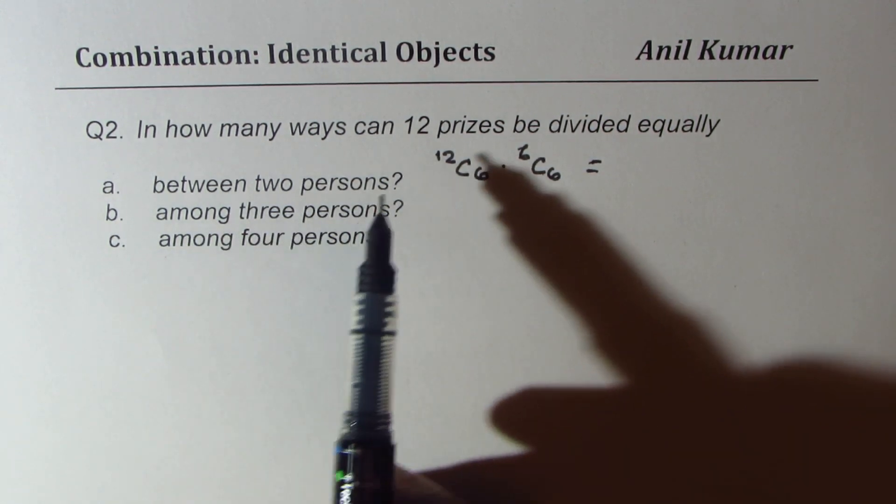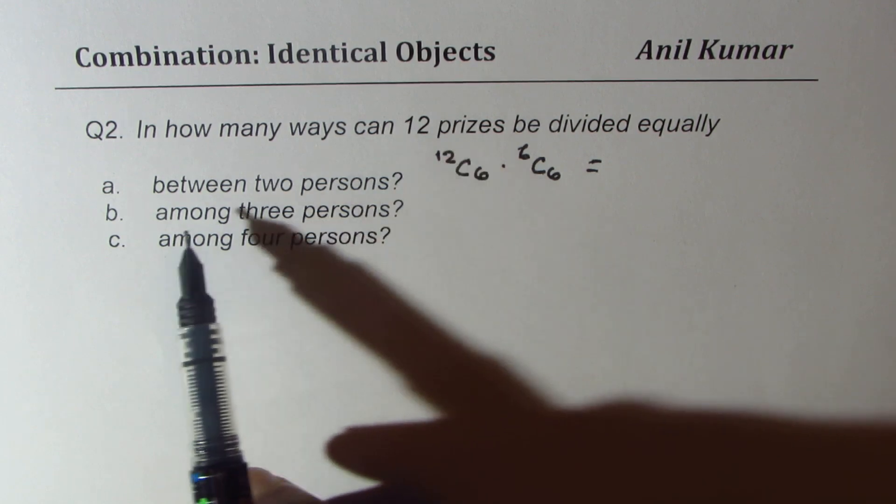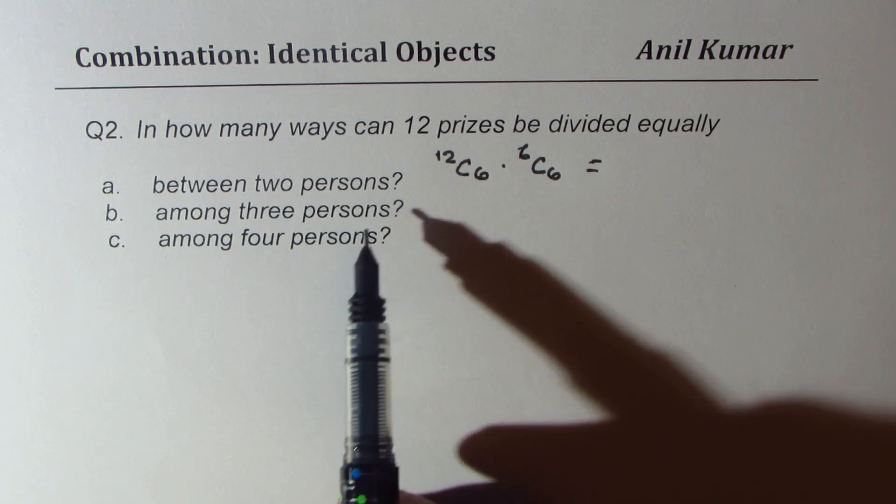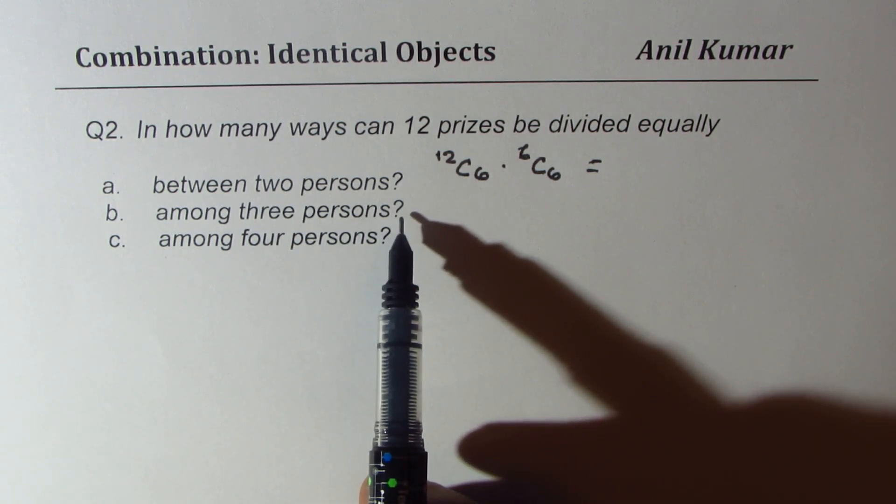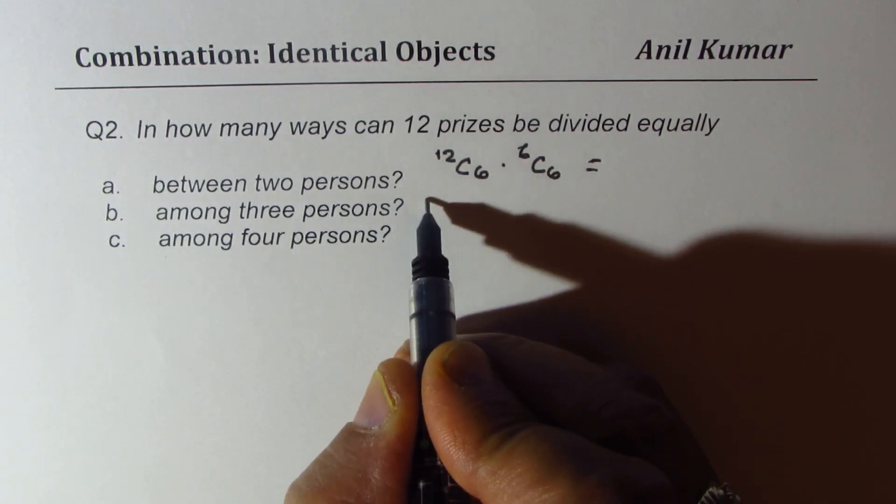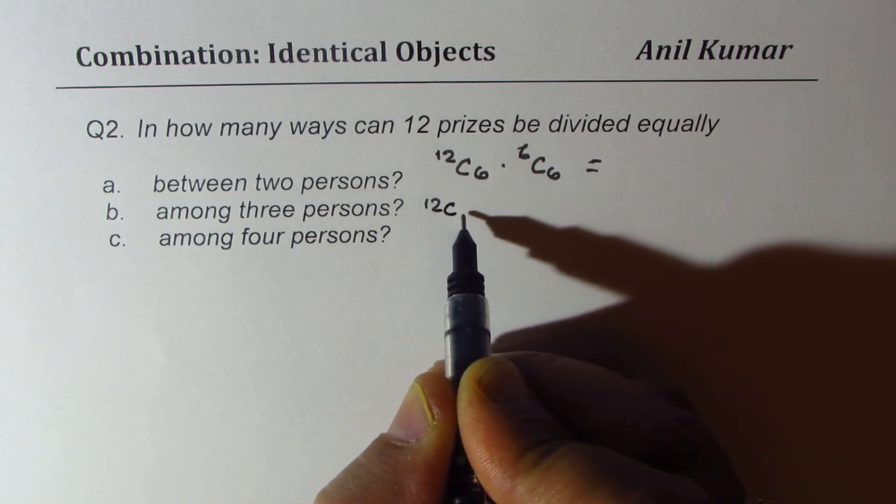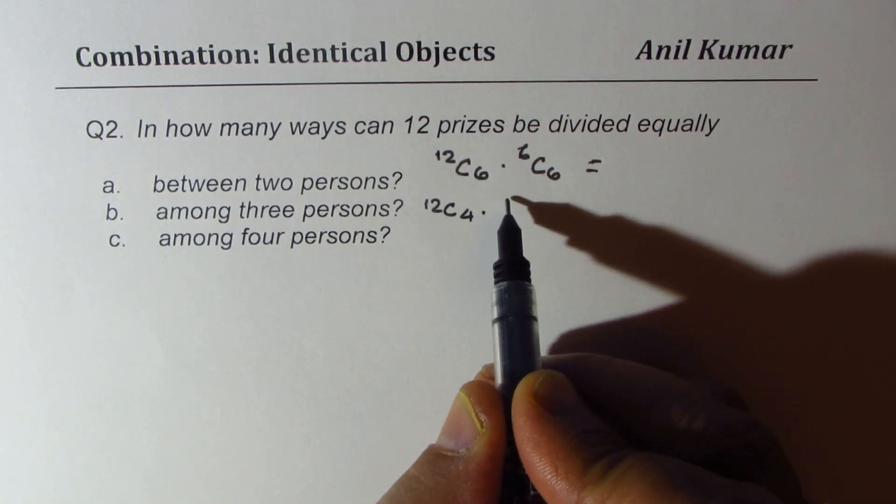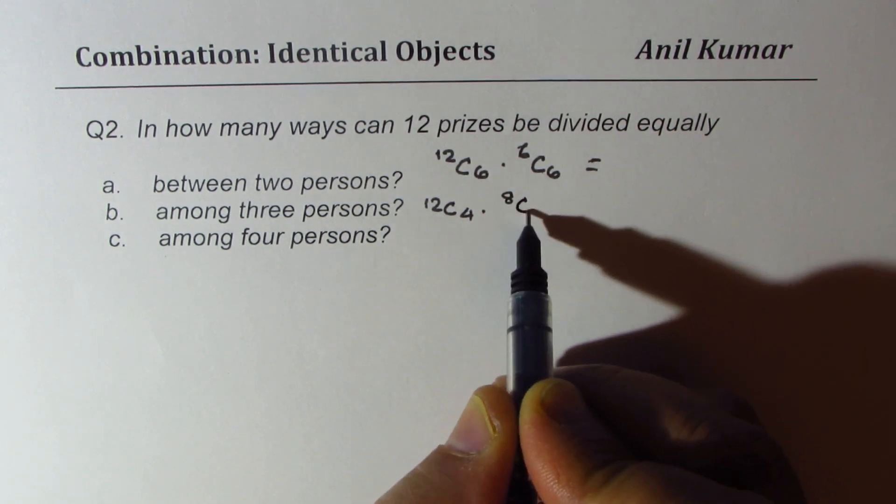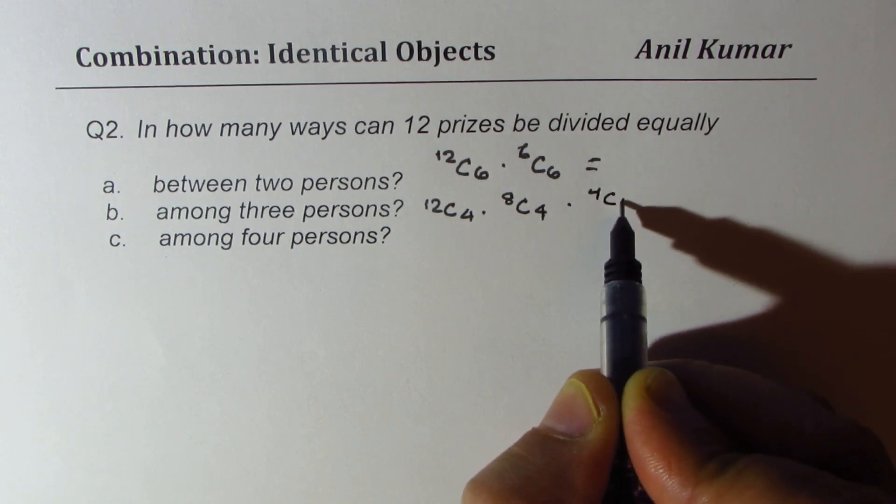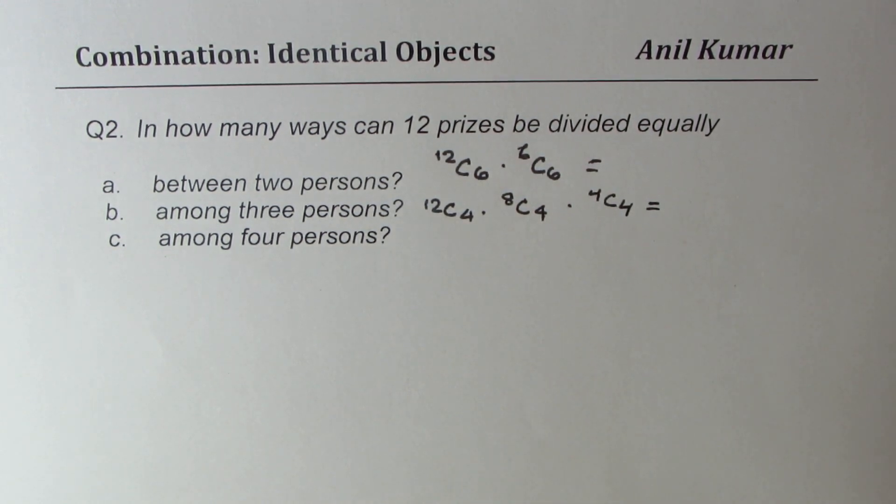Question number 2 is to distribute 12 prizes among three persons. Among three persons means everybody gets how many? Everybody gets four each. So this should be from 12, let's select four. Then for the next person, we have to choose from eight, since four have been given out, four, and then we have 4C4. That becomes the answer.